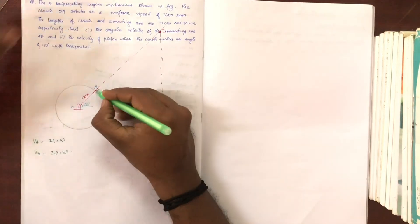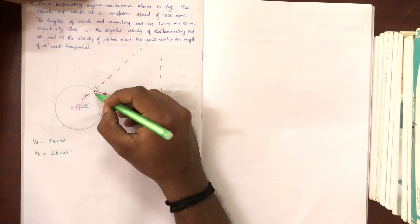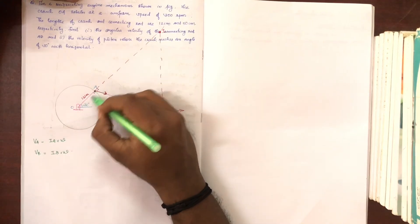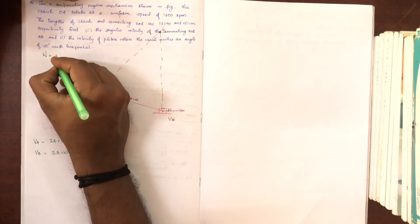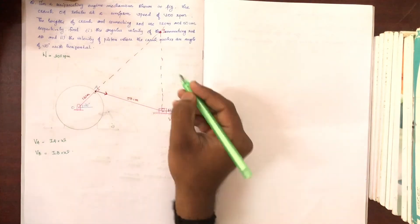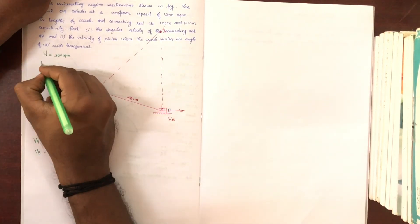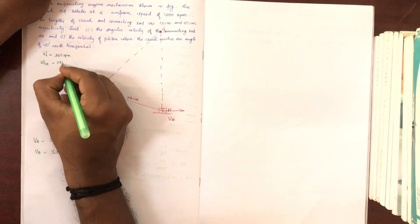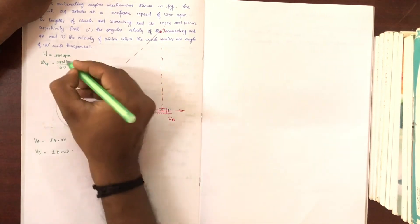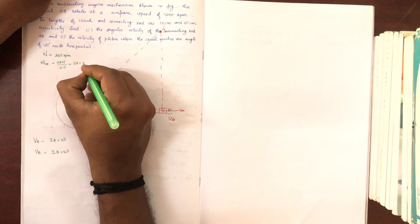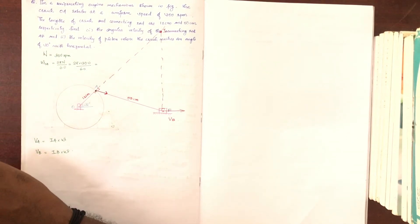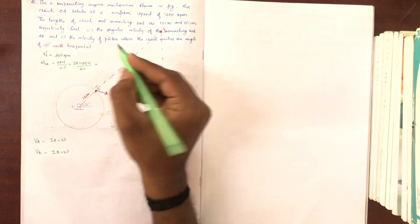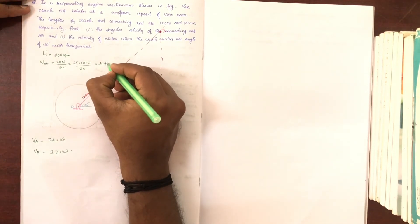We can find the velocity of A because we know the RPM of OA. We have the rotations per minute of OA, so omega of OA is 2πN divided by 60, giving us 31.4 radians per second.